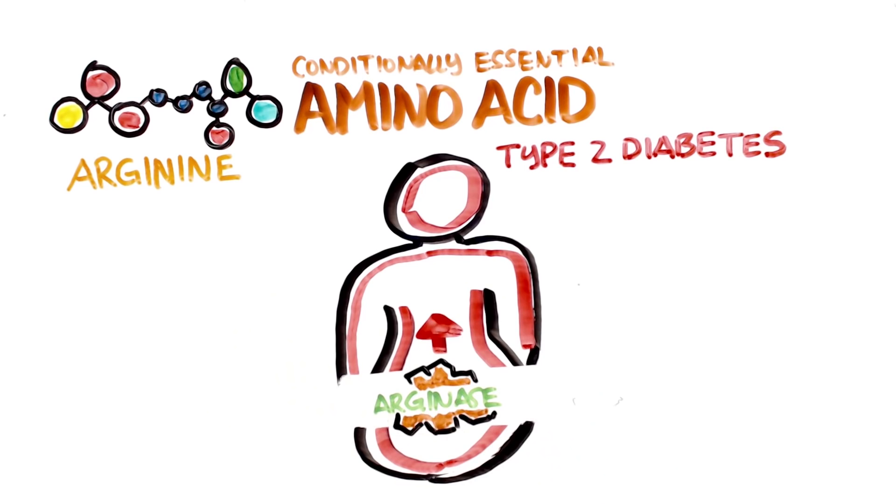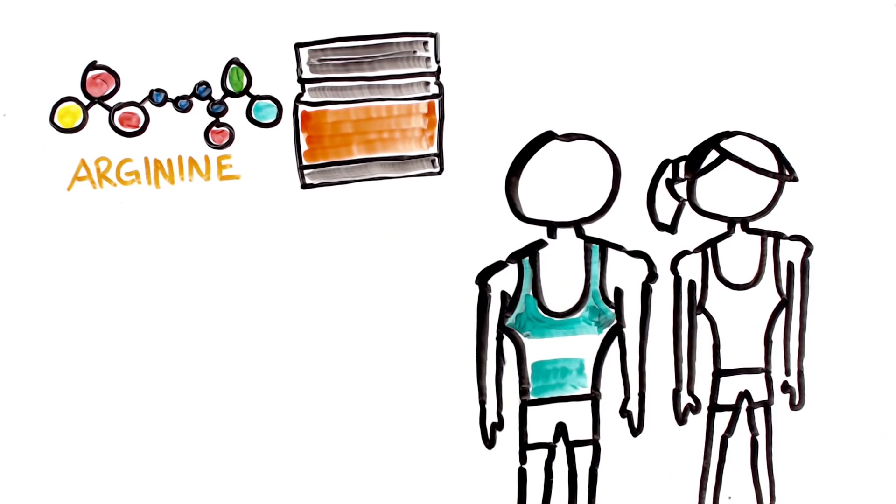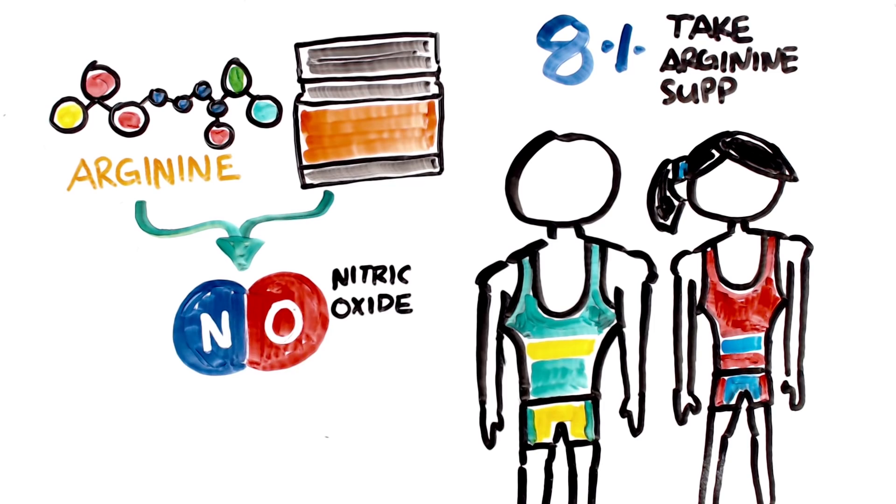Arginine supplementation is quite popular among collegiate athletes, where 8% of them take it. Its main use is increasing the production of nitric oxide, a signaling molecule known to relax heart muscles, which can help reduce blood pressure.